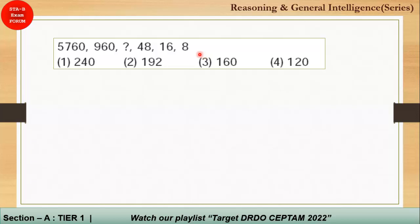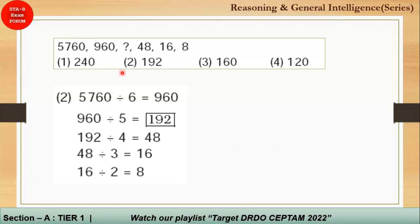The next question involves a large starting number decreasing to a smaller number, so a division operation is applied. You are continuously dividing by decreasing numbers: divide by 6, then by 5, then by 4. The answer for this question is 192. You can also work in the other direction: 8 → 16 → 48. Use whatever approach suits you best.